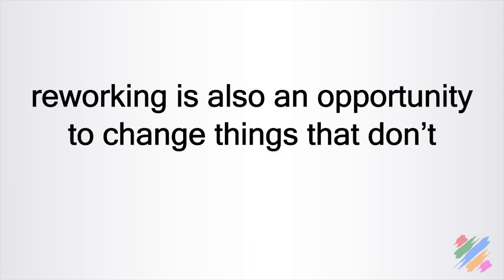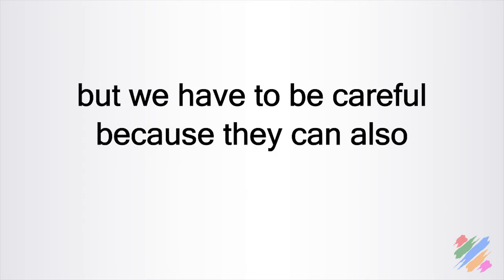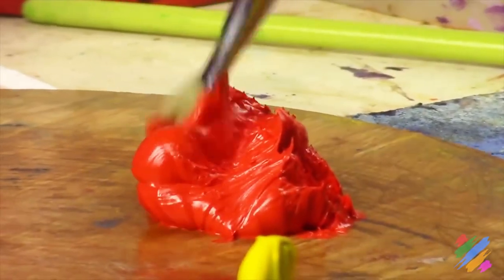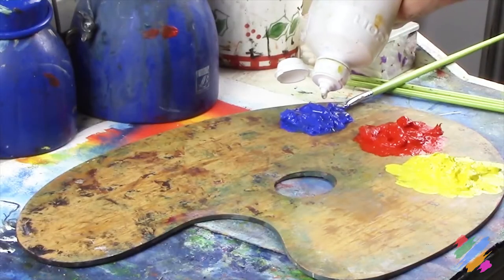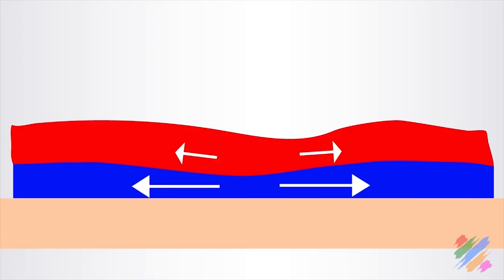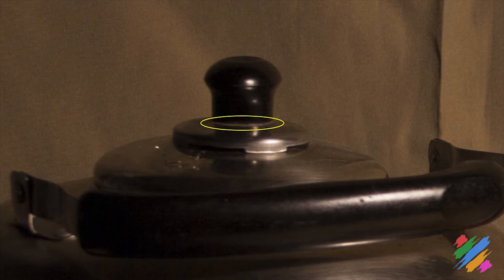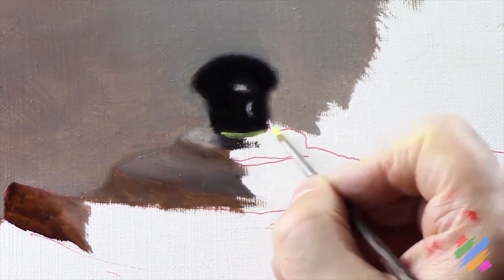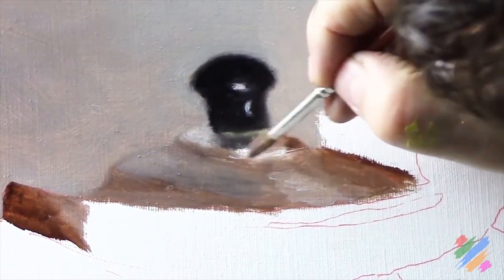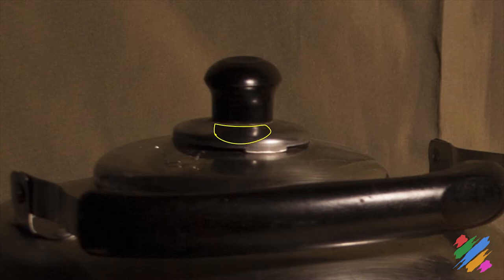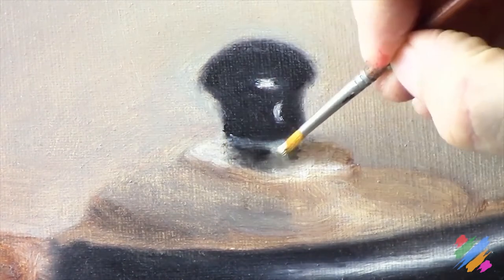Reworking is also an opportunity to change things we don't really like in our scene, but we have to be careful because they can also make things worse. As we already said many times, the first part of the reworks phase starts from the palette. In this case, we have to thin our oils more than before to make sure the top layer doesn't crack while the polymerization goes on. There are things that are much easier to rework than to paint in the first phase — like this line at the bottom of the teapot's handle, which disappeared while we were blending colors. We can paint it now, and it will be much easier.